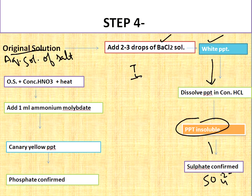Next, this is step number one. If precipitate dissolved, then what we have to do? You have to again take the salt and make the original solution. Add concentrated HNO3 plus heat and one ml of ammonium molybdate. This is the test for phosphate.